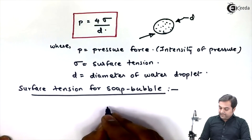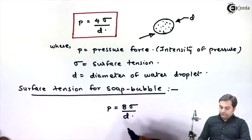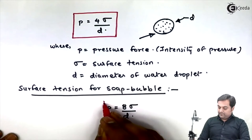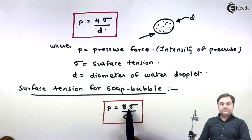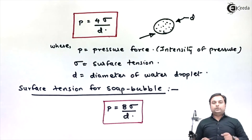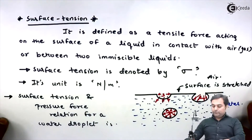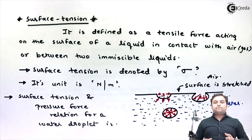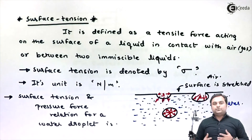For a soap bubble, the formula is p = 8σ / d, where sigma is the surface tension and d is the diameter. So we have two different formulas: the first for a water droplet, which is like a sphere, and the second for a soap bubble. In summary, we have seen what surface tension is, how it acts, its unit, its symbol sigma, and the key formulas.